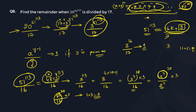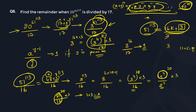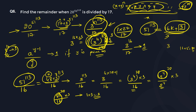Now going back to the main problem: 3^(51^113) can be rewritten as 3^(16K + 3), which is (3^16)^K × 3^3, divided by 17. By Euler's rule, 3^16 divided by 17 gives remainder 1. So the remainder becomes 1^K × 3^3 = 27. Dividing 27 by 17 gives a final remainder of 10.